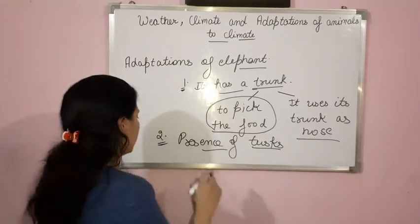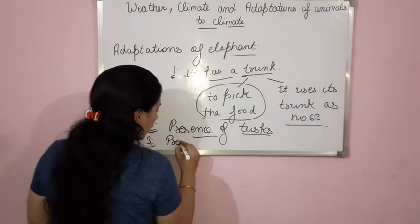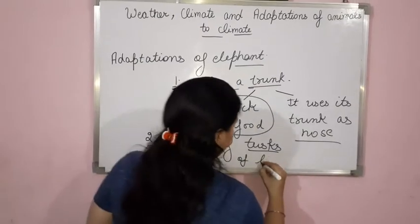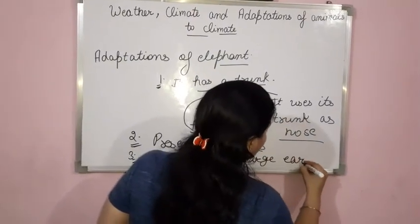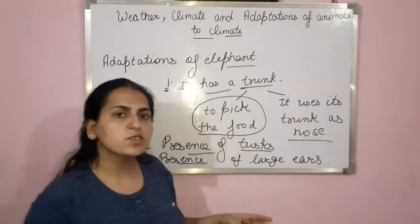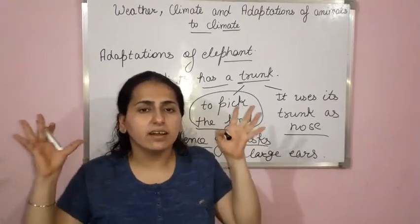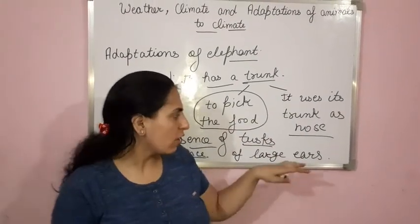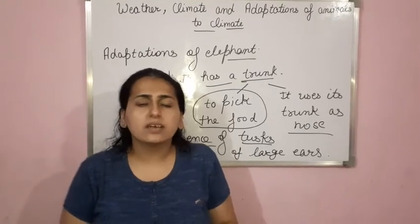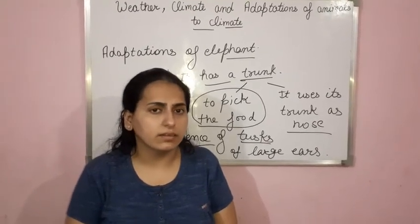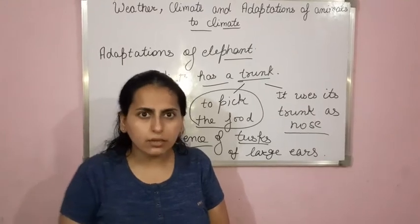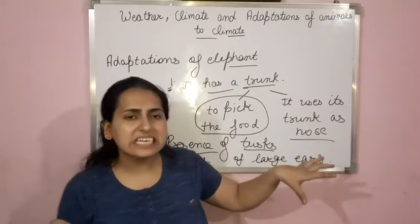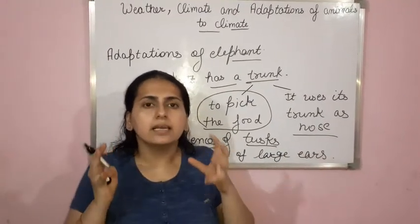The third adaptation is the presence of long and large ears. You might have seen that elephants have large ears. With the help of these large ears, the elephant can listen — even very soft sounds.